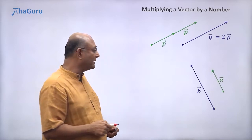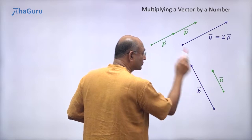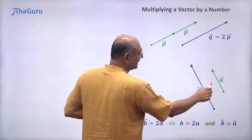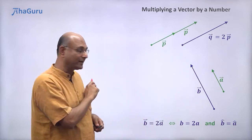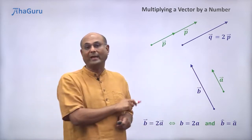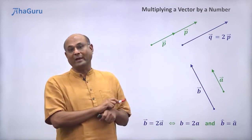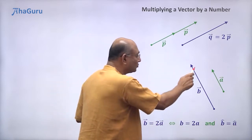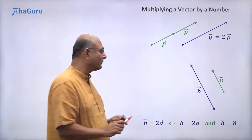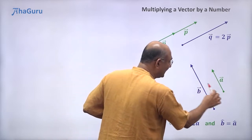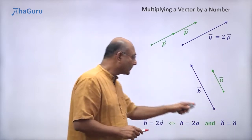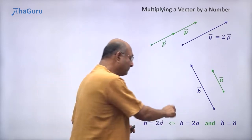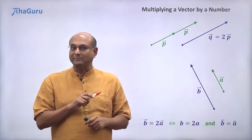Let us look at vector a and vector b. When I say that b vector is 2 times a vector, it means the length of b vector is 2 times the length of a vector — b equals 2a. The magnitude of b is equal to 2 times the magnitude of a. And that's not alone enough. The direction of b and the direction of a must also be the same — b cap equals a cap. Only if both conditions are true can you say b vector is 2 times a vector.